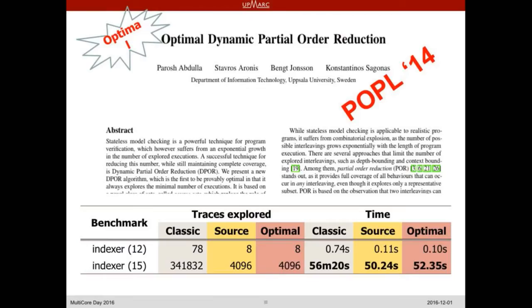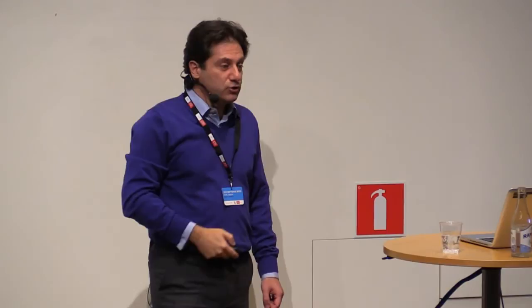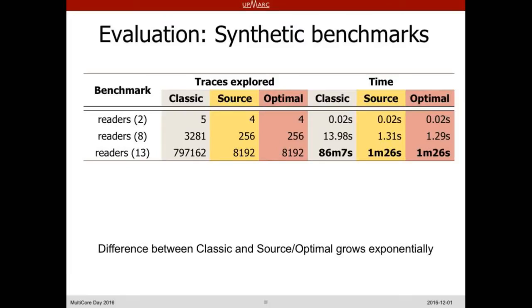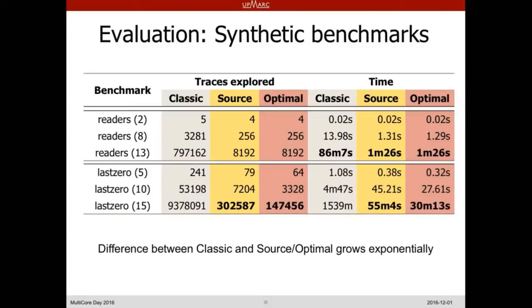On the second benchmark, the difference gets even bigger — Source DPOR and Optimal DPOR required less than a minute, while the classic algorithm requires almost an hour. We also showed theoretically that the difference can be exponentially large — you can construct benchmarks where the gap grows and grows without bound.